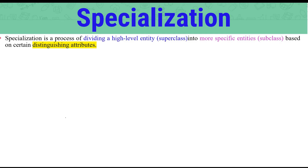The other concept is Specialization. Specialization is the opposite of Generalization in definition. Specialization is a process of dividing a higher-level entity or superclass into more specific entities or subclasses based on certain distinguishing attributes. So where generalization groups sub-entities upward, specialization divides a higher entity downward into classified sub-entities.